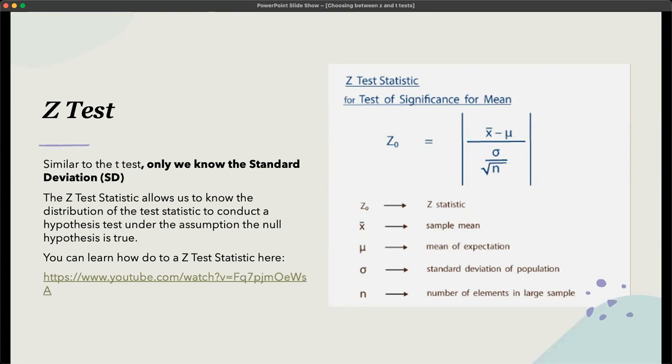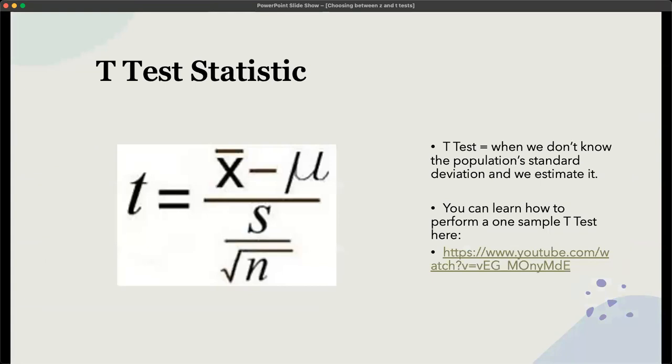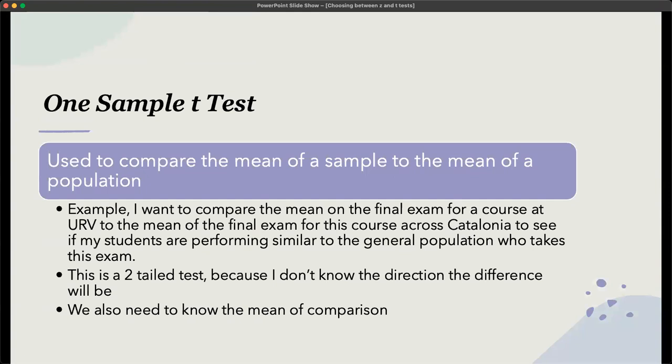And this is the t-test statistic. So this is what the formula looks like if you want to do this by hand. And I have a link to the video in the PowerPoint presentation. But the t-test, we do not know the population standard deviation. I'm going to have separate videos showing how to do a one sample t-test, a paired samples t-test, and an independent samples t-test. Those will be three separate videos showing how to do those in JASP.